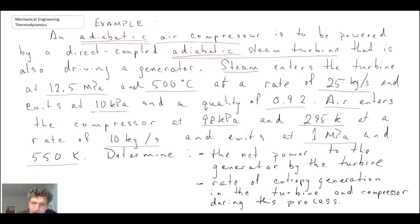We're looking for two things: what is the net power to the generator with this coupled compressor and turbine, and what is the entropy generation for this process. I'm going to draw out a diagram to help keep things straighter because it's a rather complex problem.